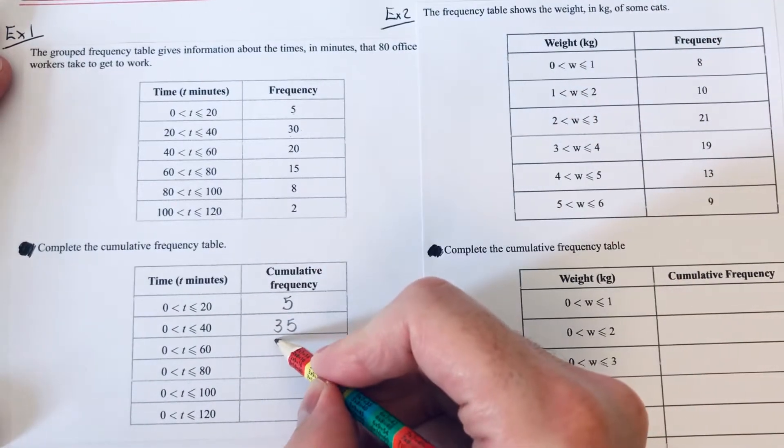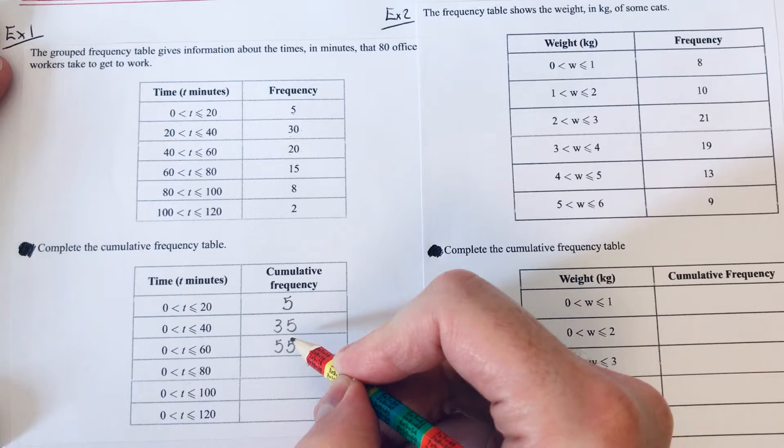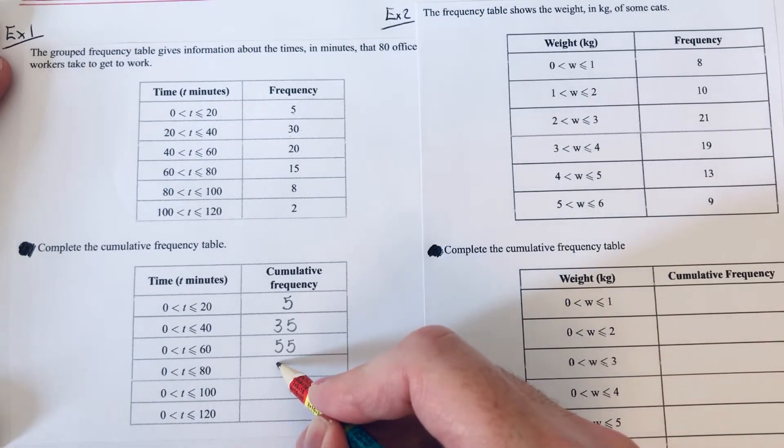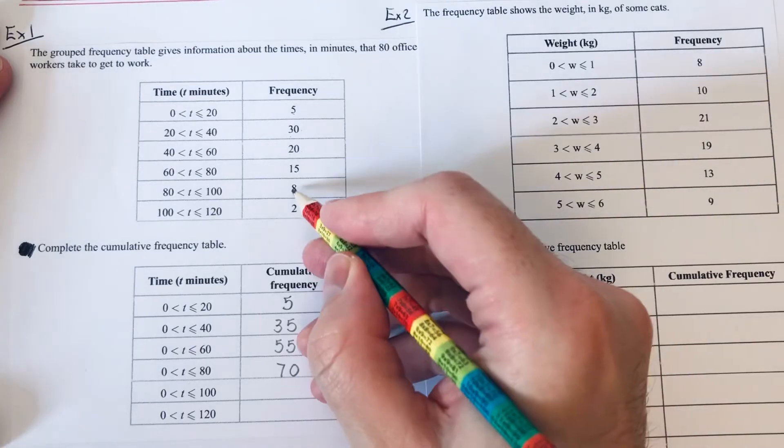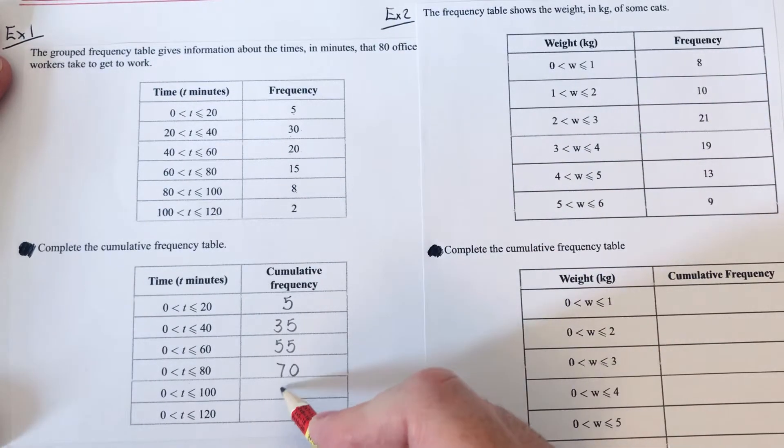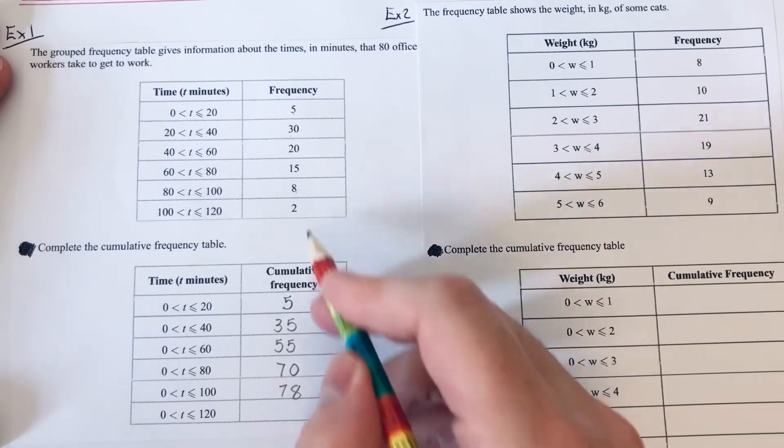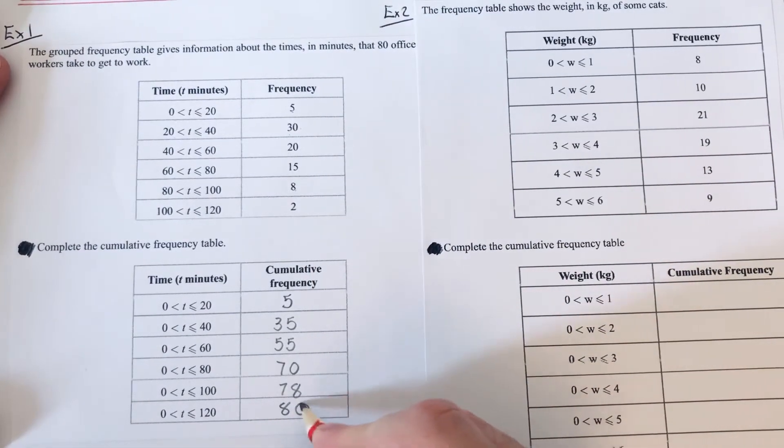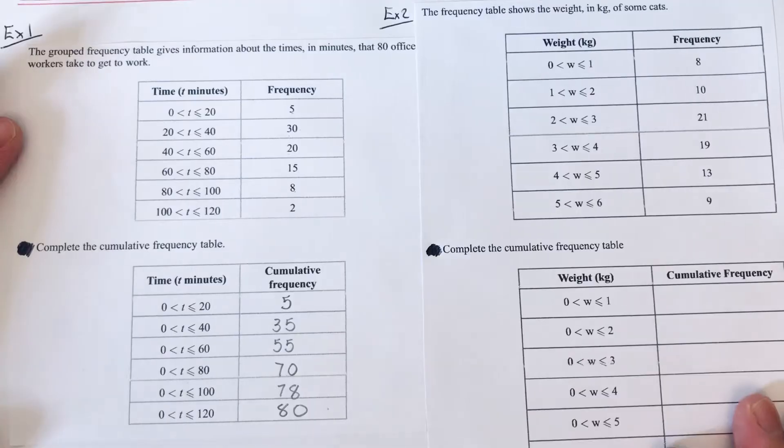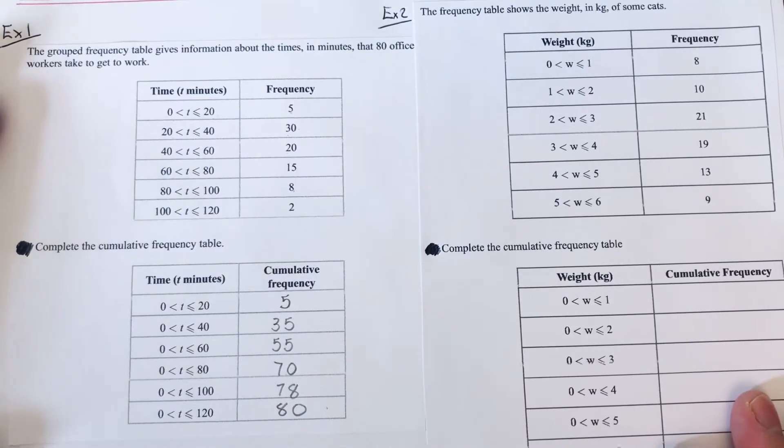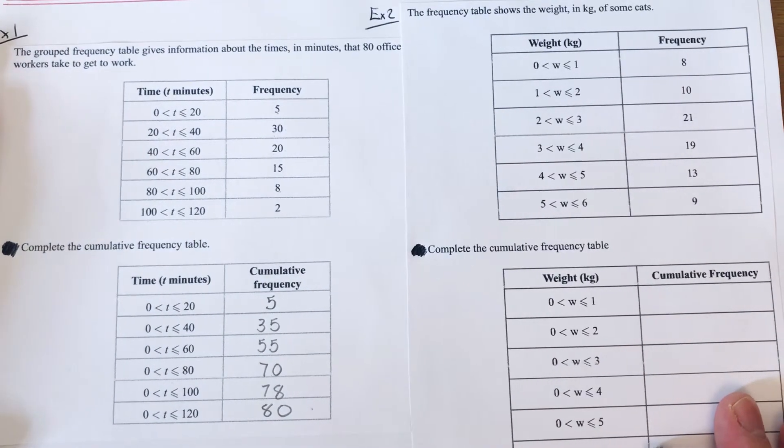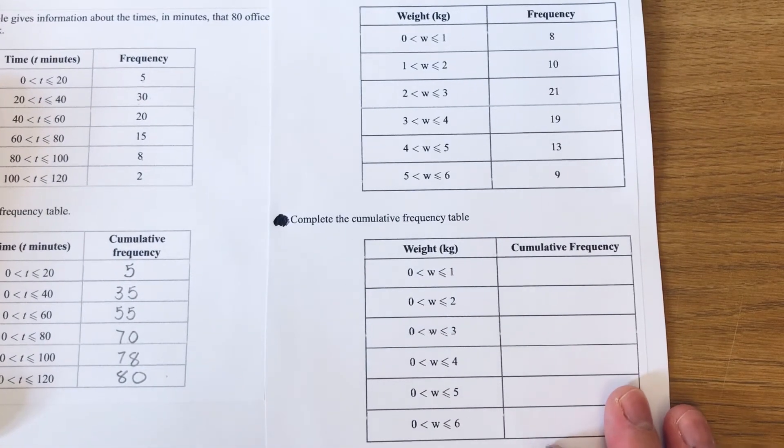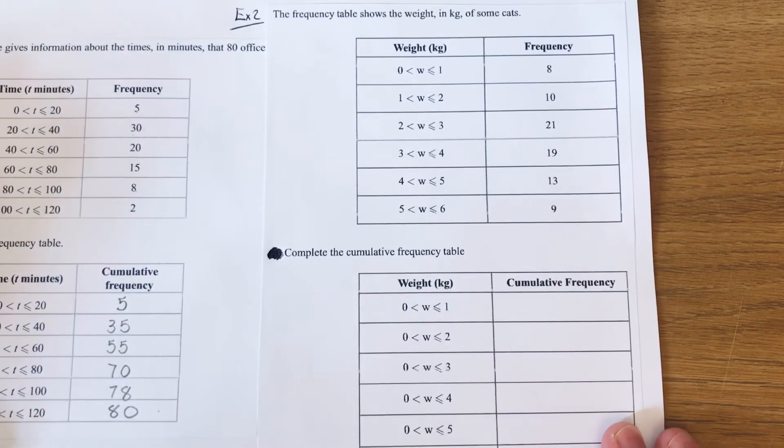Then add on the 20, which is 55. Then add on 15 to 55, which is 70. Then add the 8 onto 70, which is 78. And then add 2 onto 78, which is 80. So that is our cumulative frequency table done for our first one.